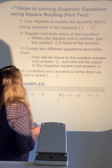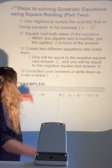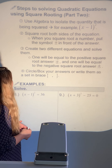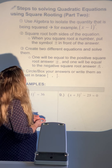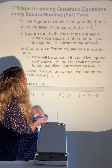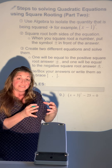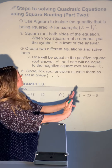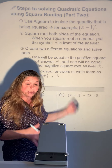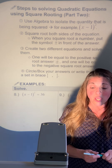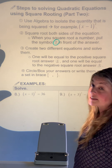This is part two. Still use algebra to get that squared quantity alone on one side with a constant on the other. Then square root both sides of the equation. Just like before, put the plus or minus symbol in front of the answer.